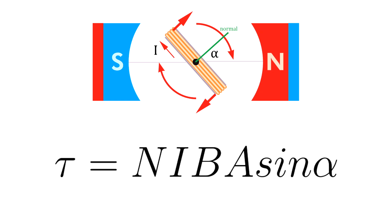It's valid for any number of turns of the loop and for any position of the loop. Compared to the previous equation, we have an extra n here—letter n, which represents the number of turns in the loop—and the function of sine.